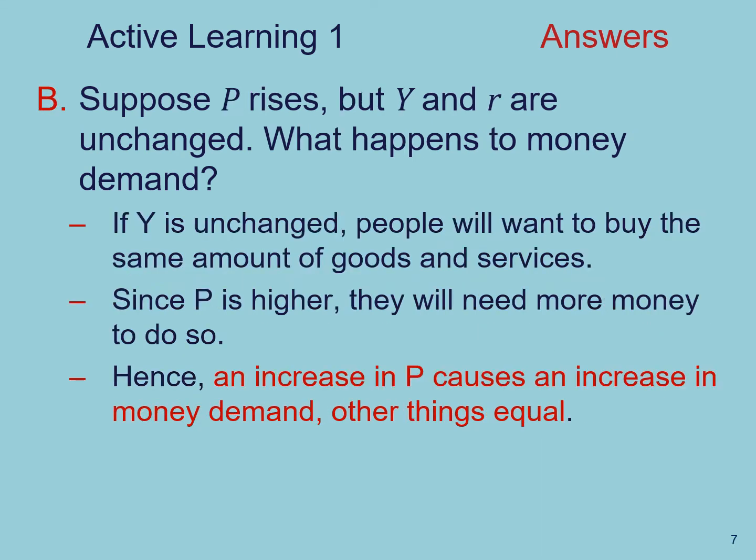Now let's suppose that the price level rises, but income and the interest rates are unchanged. What happens to money demand in this case? Well, if real income is unchanged, people will want to buy the same amount of goods and services. But because prices are higher, they will need more money to do so. For that reason, an increase in prices causes an increase in the demand for money, other things being equal.